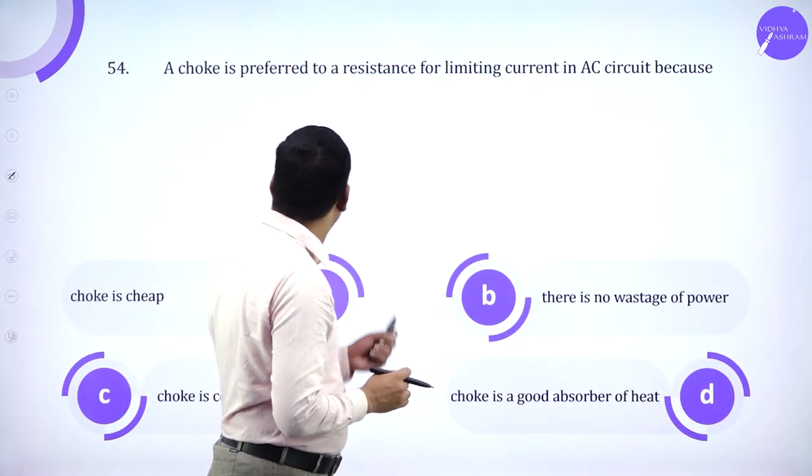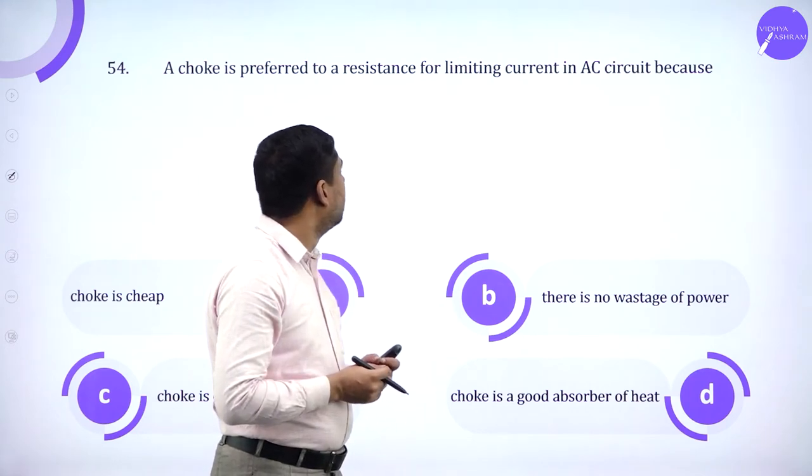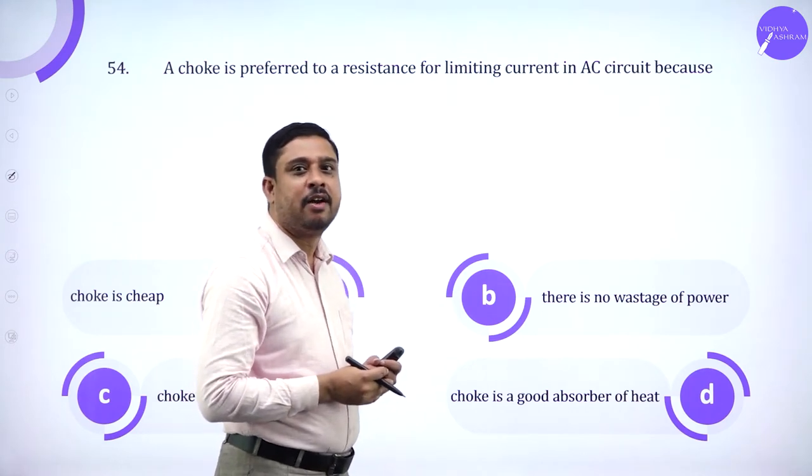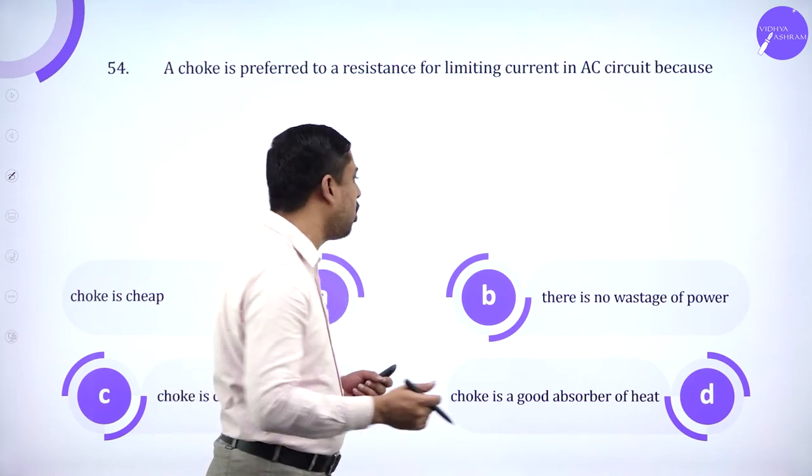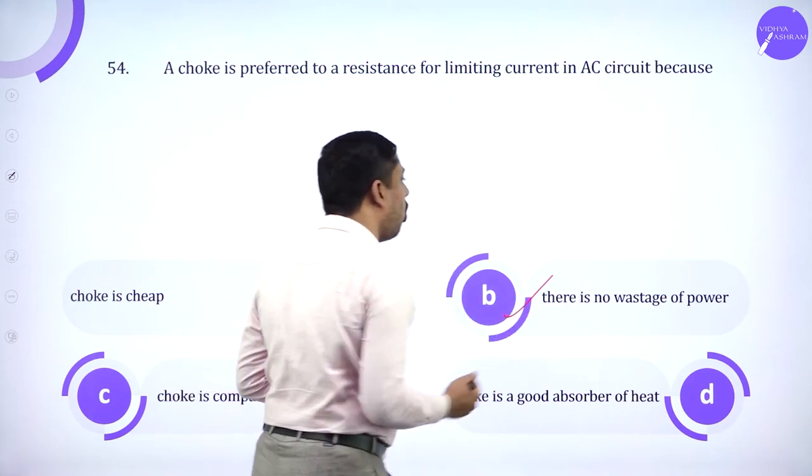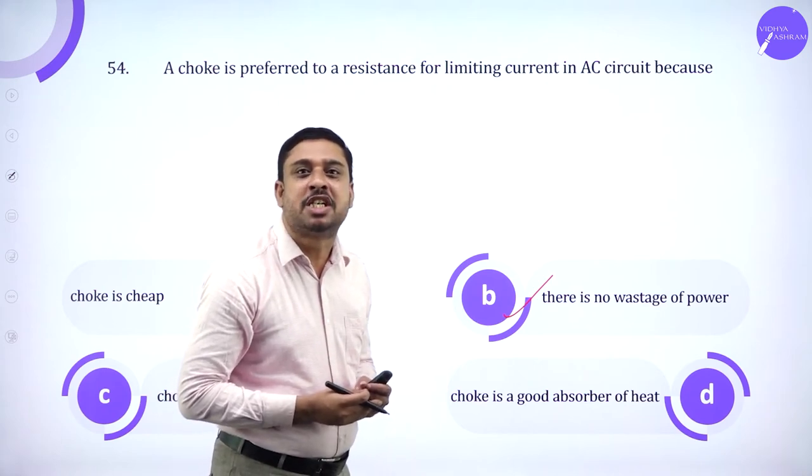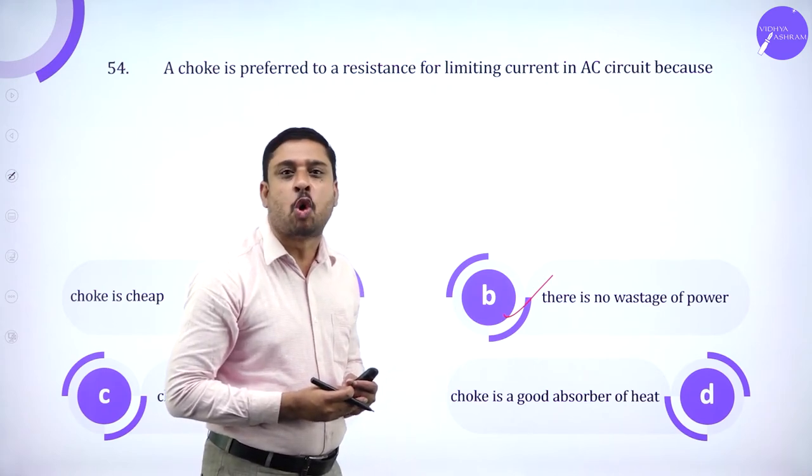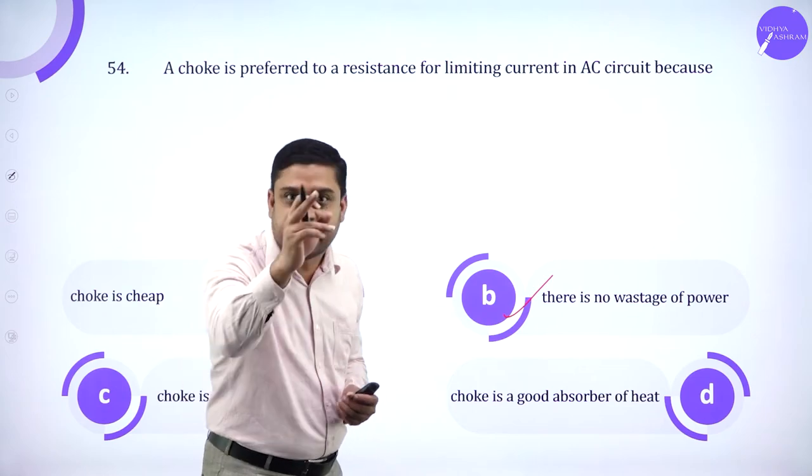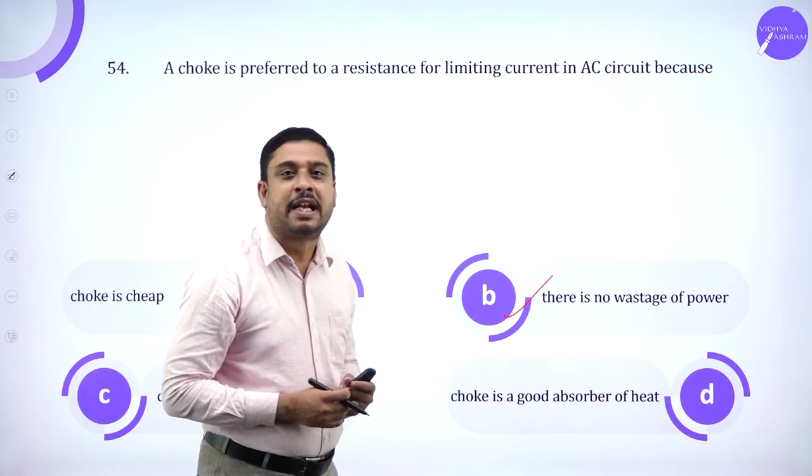A choke is preferred to a resistor for limiting AC current because here there is no wastage of power. Power dissipation is 0. Choke doesn't consume power whereas resistor will consume.